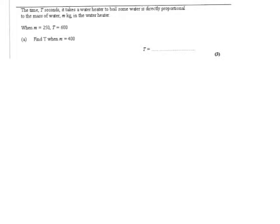Taking the first question, we are told that the time it takes for a water heater to boil some water is directly proportional to the mass. So we write that t, the time, is directly proportional to m, the mass. To write this as an equation, we write that t equals k, the constant, multiplied by the mass.